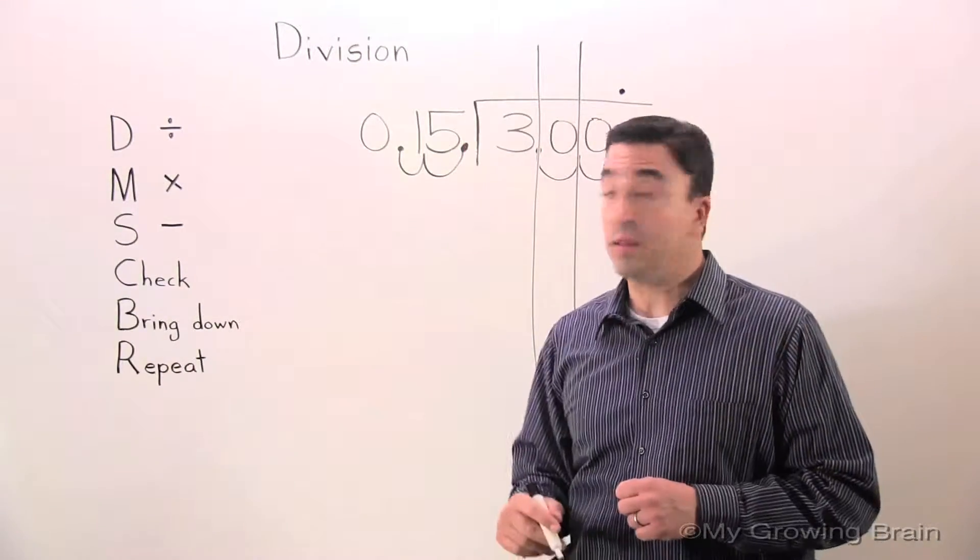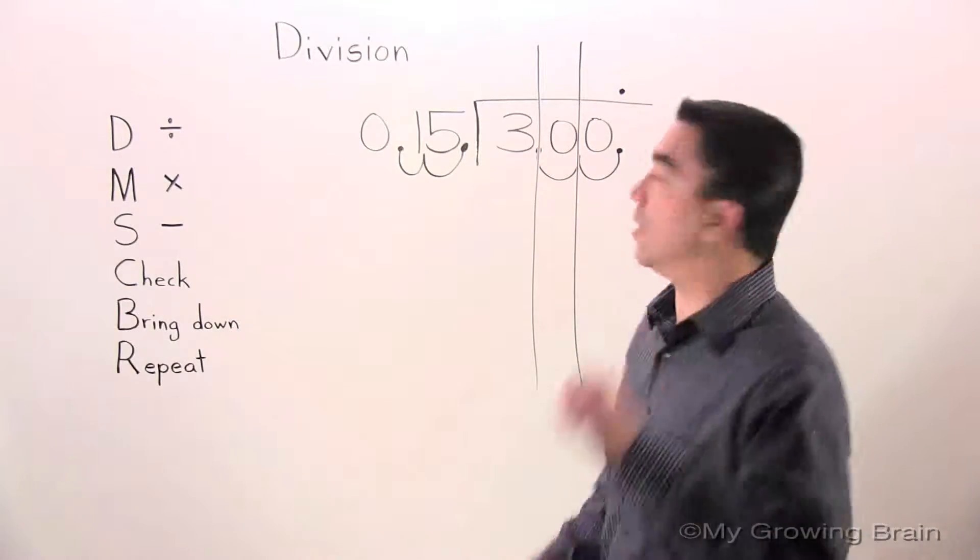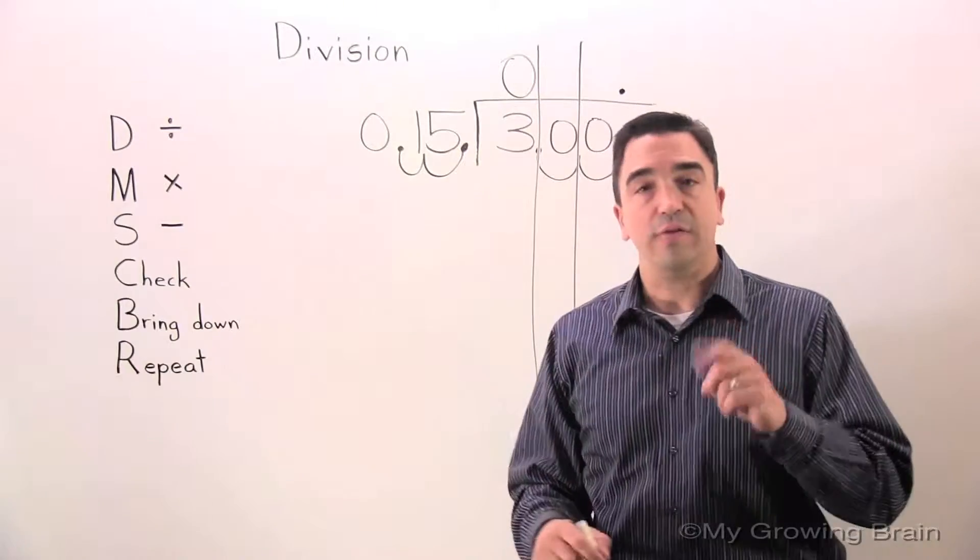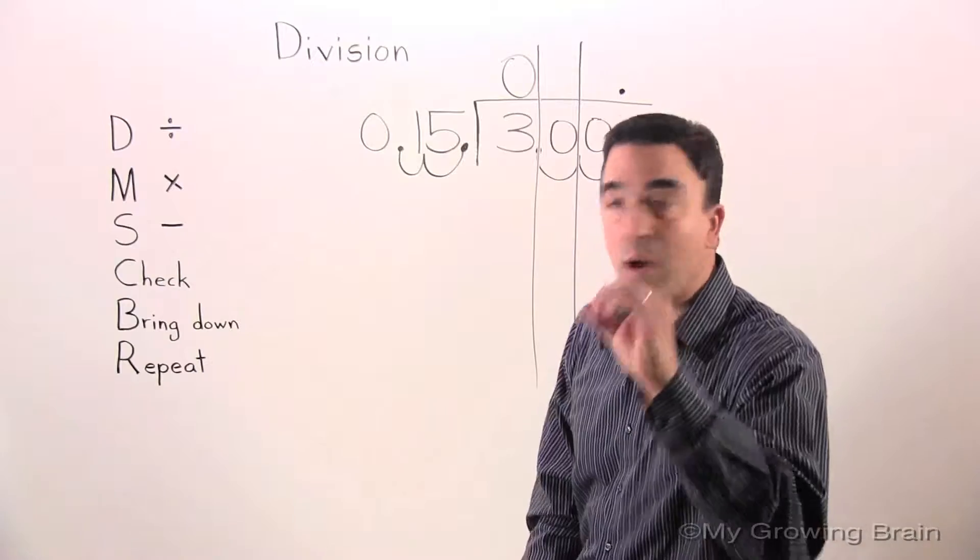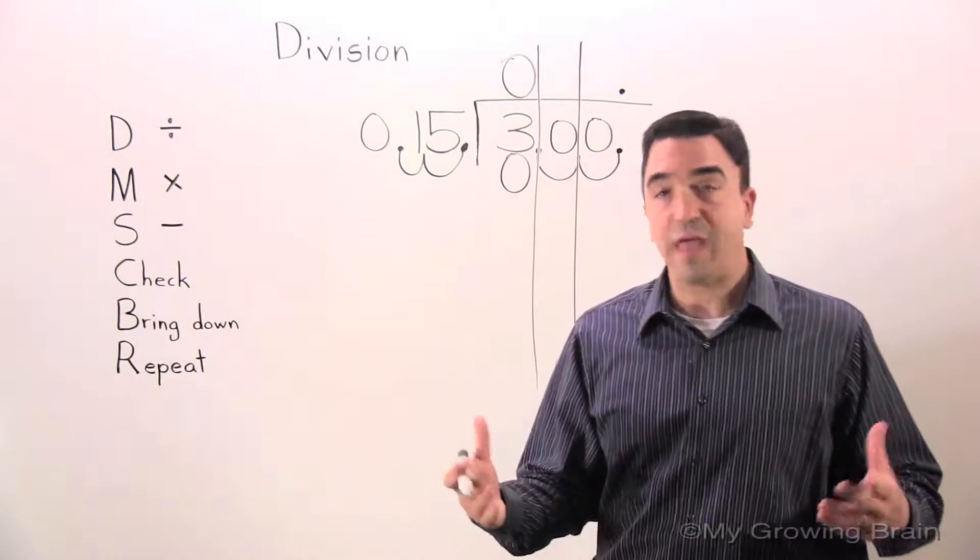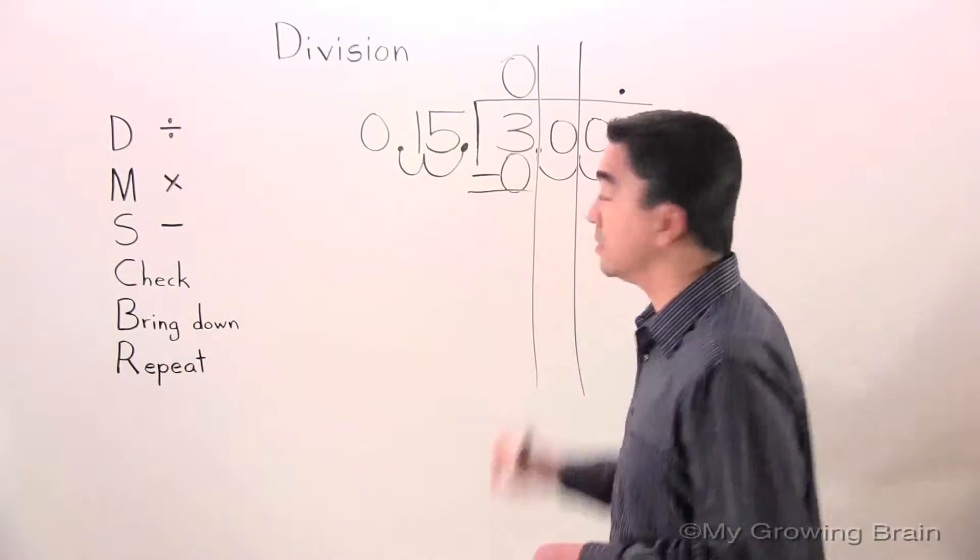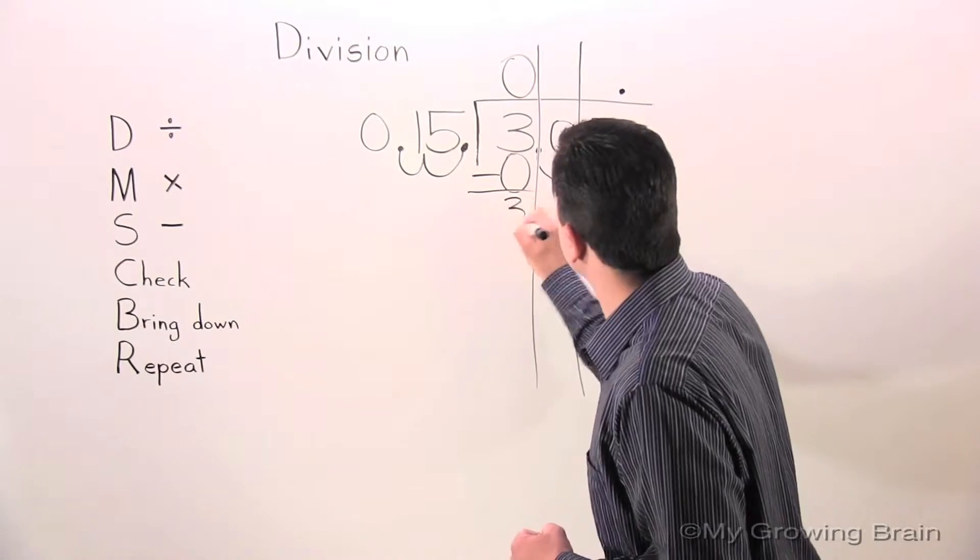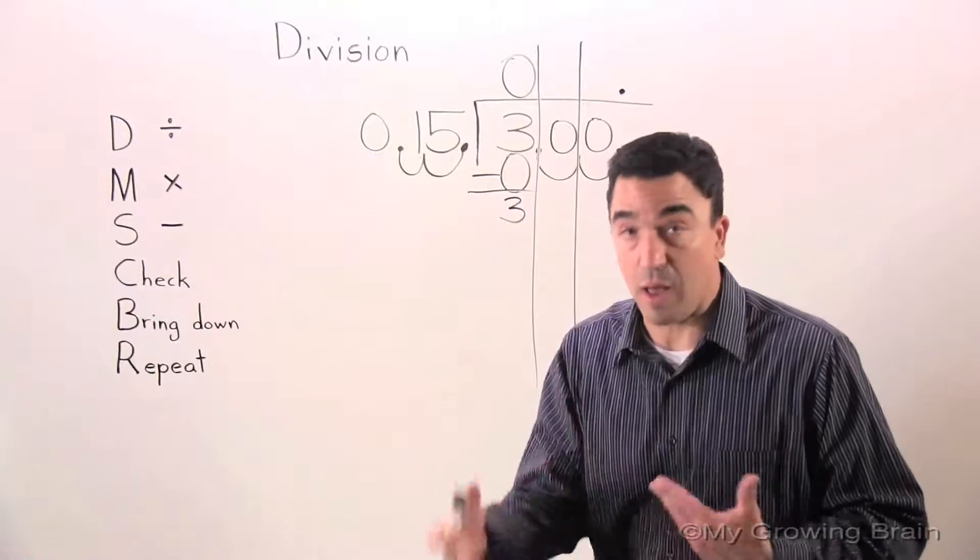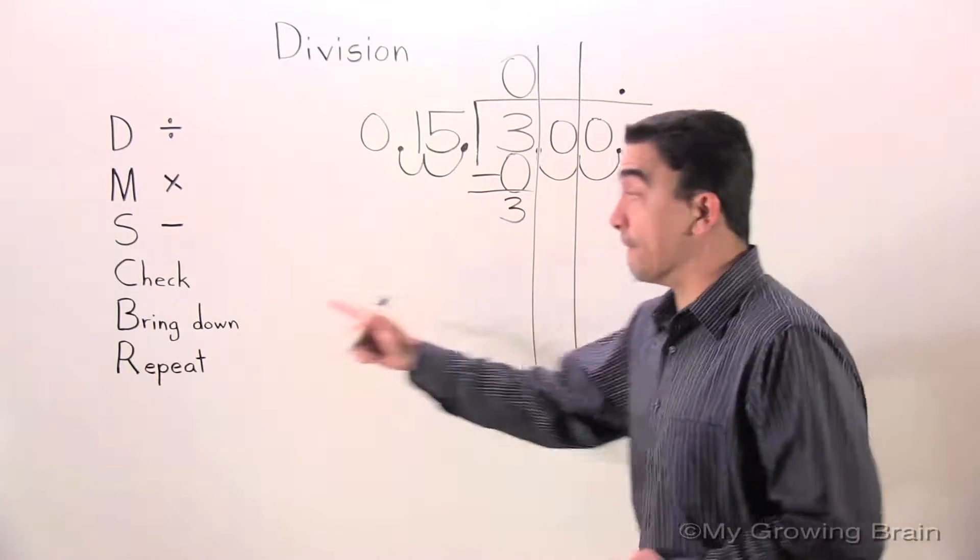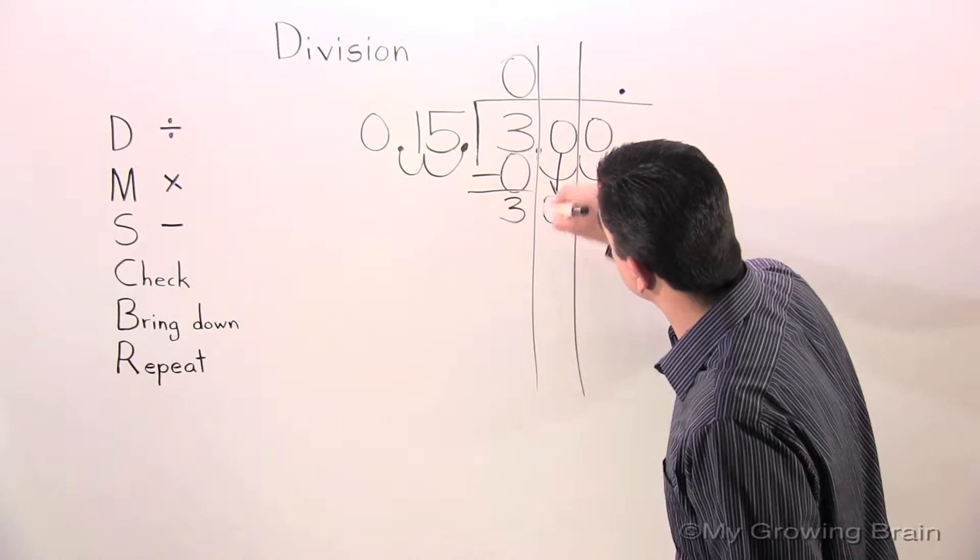3 divided by 15, or 15 into 3. Can't do it. Use a zero. Next step: Multiply. 15 times 0 is 0. Next step: Subtract. 3 minus 0 is 3. Next step: Check. 3 is less than 15, keep on going. Next step: Bring down. Bring down the zero. 30.